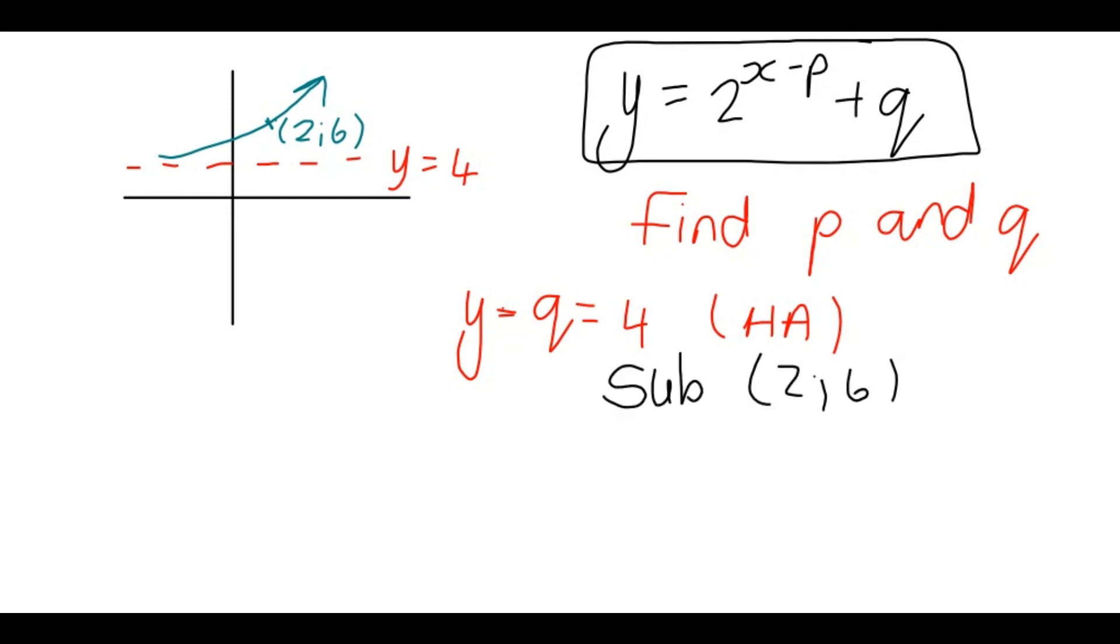I'm going to substitute in the value. x is 2, y is 6. So y is 6, 2, x is also 2, minus p, plus the q is now 4.